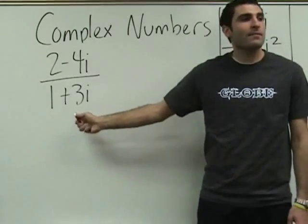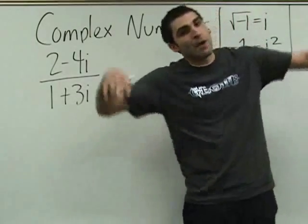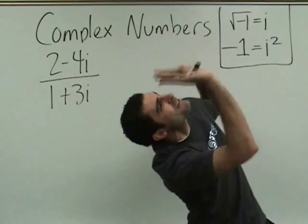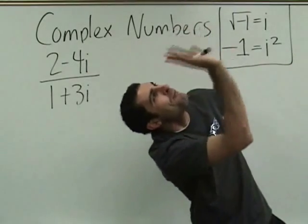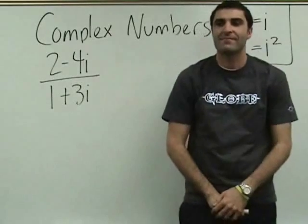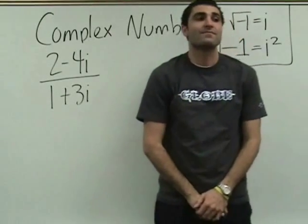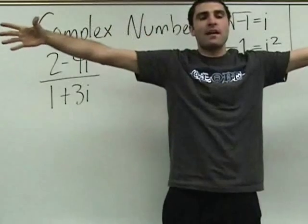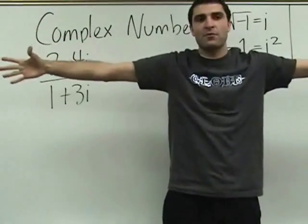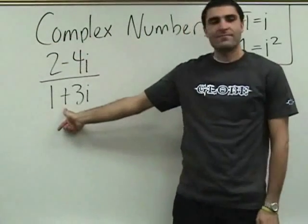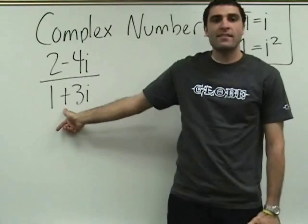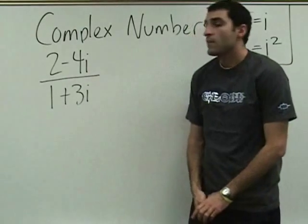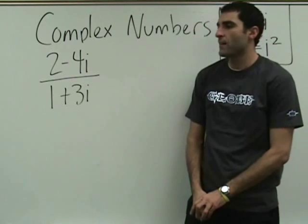There's an i on the bottom — get it away. You've got to multiply the top and bottom by 1 plus 3i. What do we multiply top and bottom by? One minus 3i. One minus 3i. Correct. Why don't you just multiply by i? Multiplying by i won't get rid of it on the bottom.